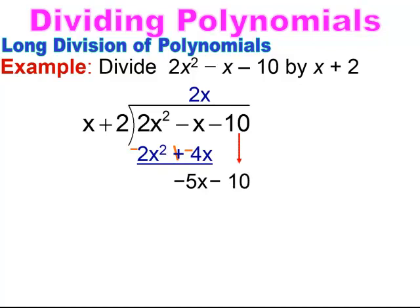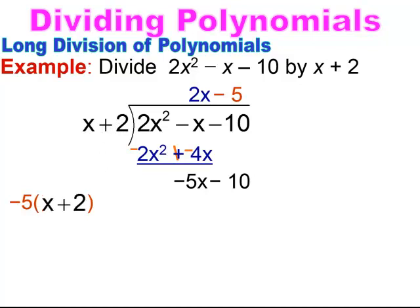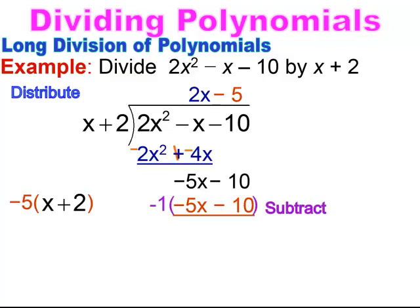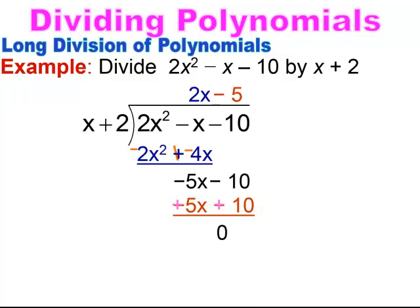The first piece cancels out — 2x squared minus 2x squared. Then you combine like terms: negative x, which is really negative 1, minus 4 gives you negative 5x. Bring down the next piece. Now you're only focused on that negative 5x and the x. Multiply x by negative 5 to get negative 5x, distribute that negative 5 to the whole thing, ending up with negative 5x minus 10. Subtract by changing the signs, add down, and you end up with 0 as your remainder. Your solution is 2x minus 5.